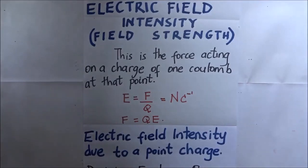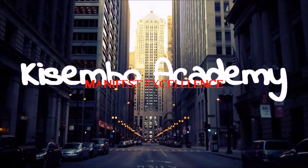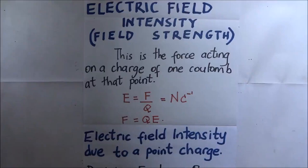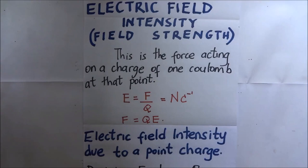Welcome to Kisembo Academy. Electric field intensity, also called field strength, is simply the force acting on a charge of one coulomb at that point. We have explored before what an electric field means — it is simply the area where the electric force is felt. So electric field intensity is the force acting on a charge of one coulomb placed at that point.